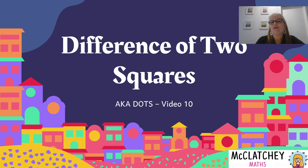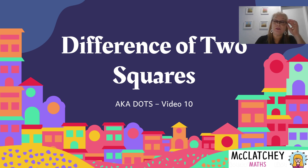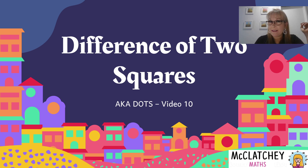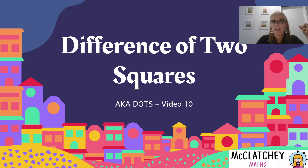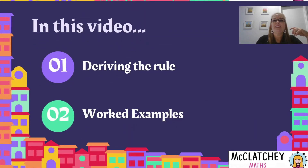Difference of two squares is also abbreviated as simply DOTS. I've also seen other textbooks call it the difference of perfect squares or DOTS. So just be aware it does have different names. We're going to call it DOTS for short in this video.